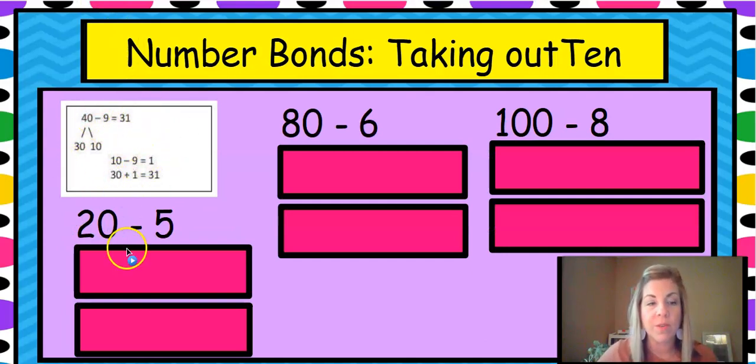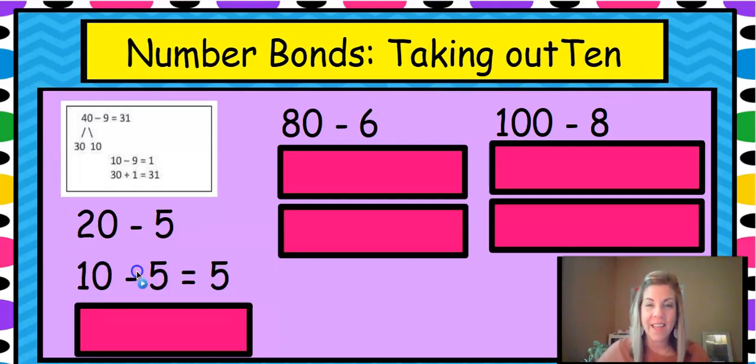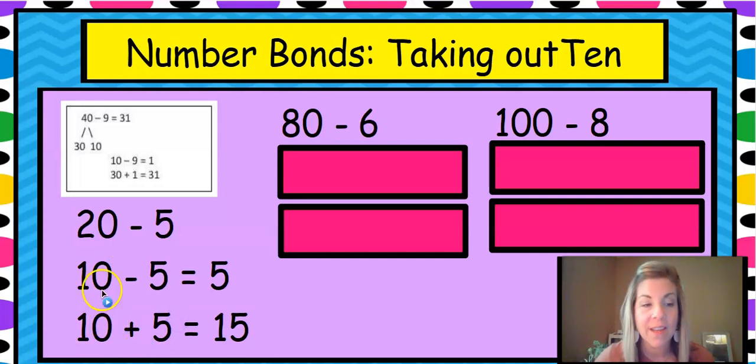So remembering with the picture here, what we did with 40, let's do 20 minus 5. Some of you could blurt out the answer right away. You know the answer. Hold that answer and wait and let other people think. We don't want to steal their education. We don't want to blurt out the answer. So first step, we are going to take out the 10. 10 minus 5 is 5. We know that. What's left? What are we going to add to this 5 to get the right answer? Yeah, we're going to add that 10, the other 10 back in because 10 and 10 make 20. 10 plus that 5 is 15.